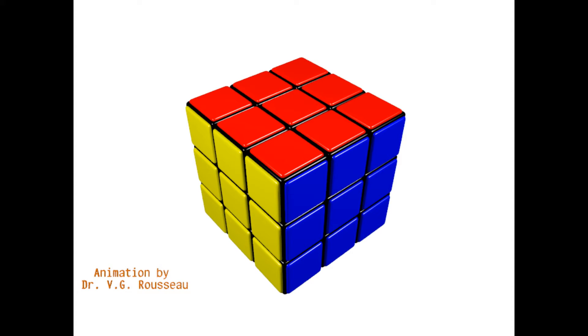Before we start, we need some definitions. I will call a cubie any element of the cube. It can be a central cubie, in which case the element is identified by its single color, for example, red. Obviously, there are six central cubies, one for each face.